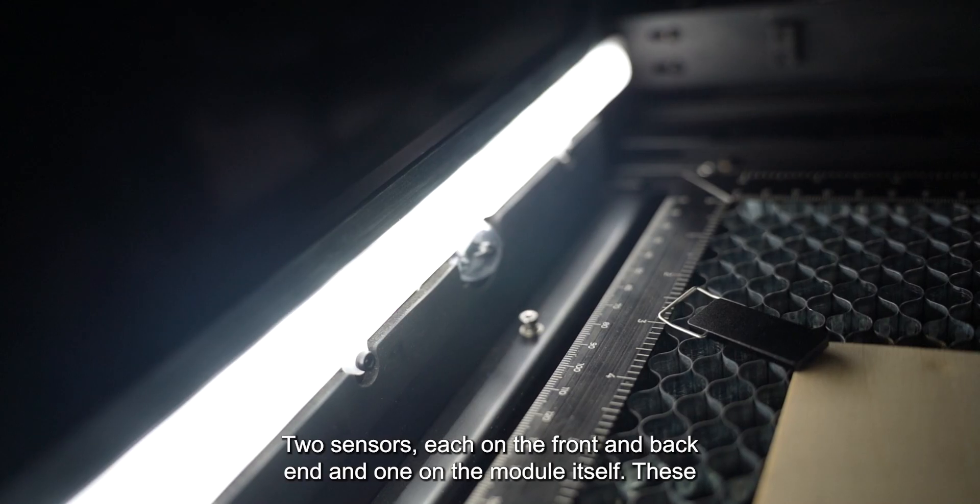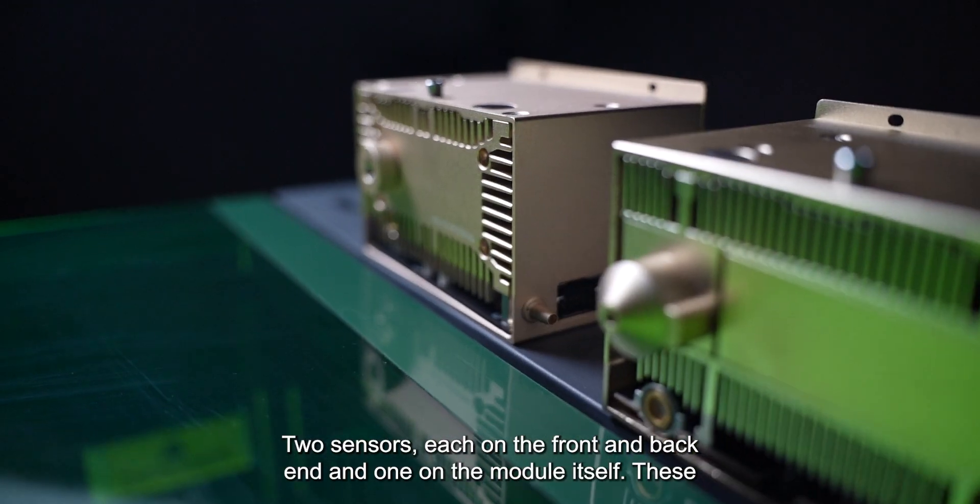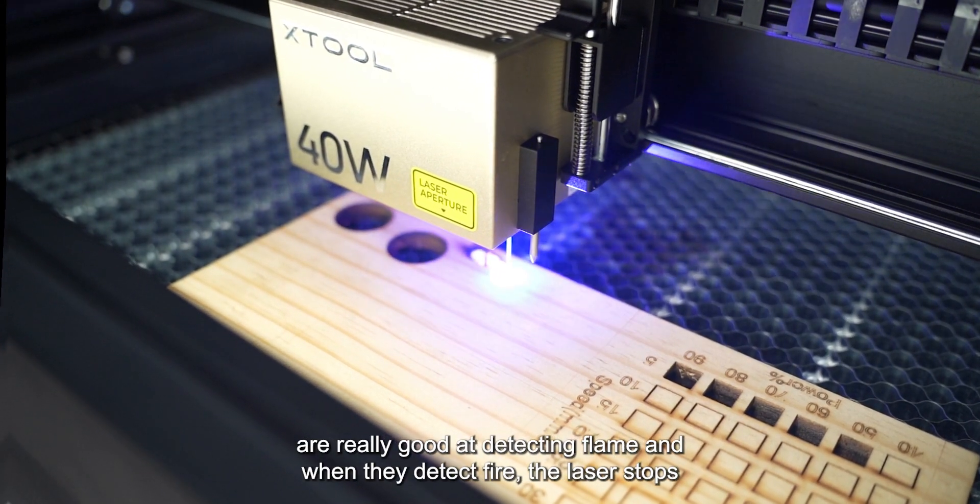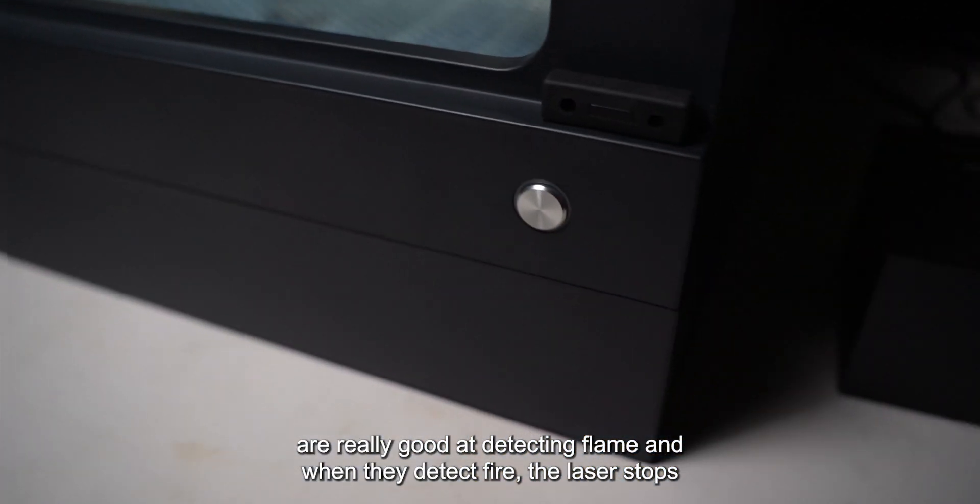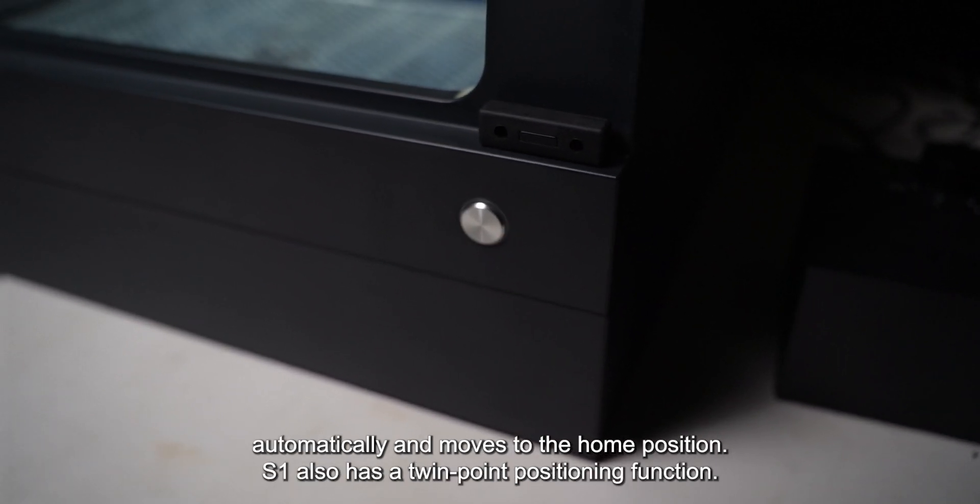Then you have the flame detectors in the S1, two sensors, each on the front and back end and one on the module itself. These are really good at detecting flame and when they detect fire, the laser stops automatically and moves to the home position.